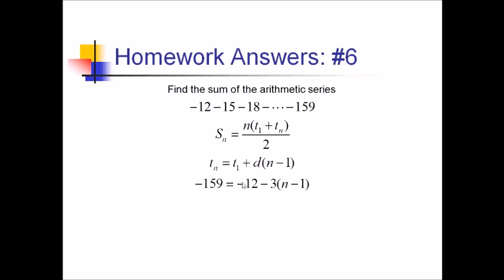I'm going to add the 12 over here. That gives me negative 147. And I'll distribute my 3 to have negative 3n plus 3. Subtracting 3, we've got negative 150. And then dividing by negative 3, that comes out to n equals 50.